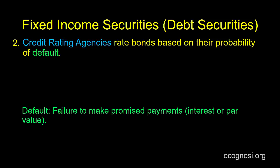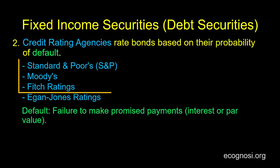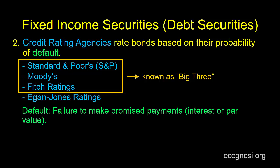To give some examples of credit rating agencies: there's Standard & Poor's, or simply S&P, Moody's, Fitch Ratings, and Egan Jones Ratings. The first three are the so-called big three credit rating agencies. Their practices underwent heavy criticism during and in the period following the global financial crisis beginning in 2007 or 2008, depending on how you see things.